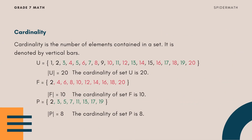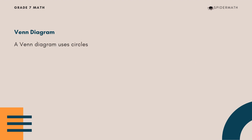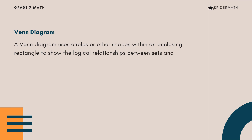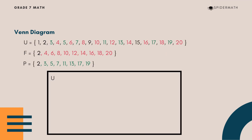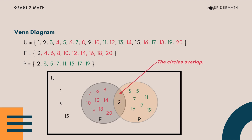Cardinality is the number of elements contained in a set, denoted by vertical bars. The cardinality of set U is 20, set F is 10, and set P is 8. A Venn diagram uses circles or other shapes within an enclosing rectangle to show the logical relationships between sets and subsets. The rectangle represents set U as the universal set, and the two circles inside represent the subsets. The circles overlap since there is a common element between set F and set P. We'll discuss more on intersecting sets in the next video.